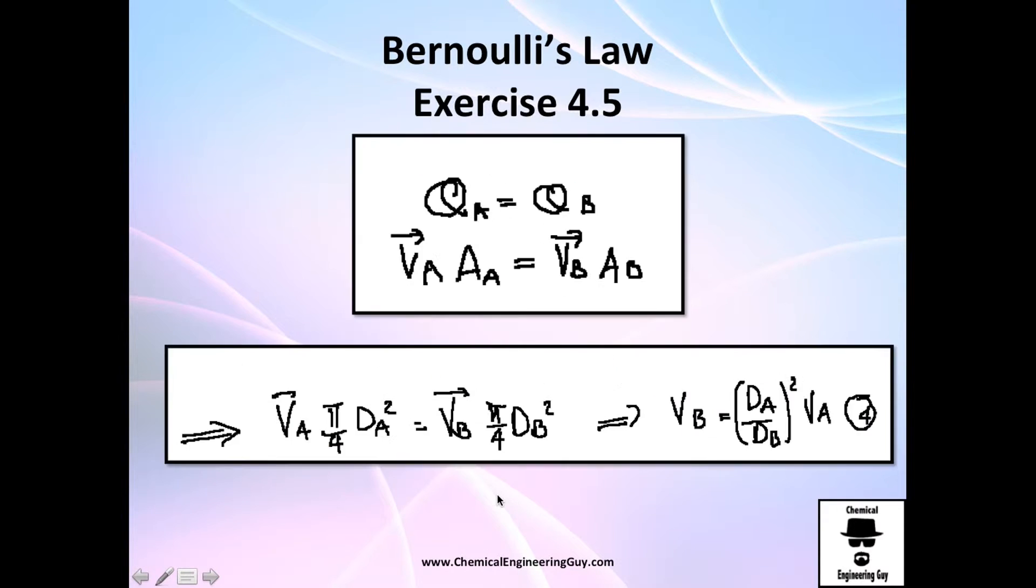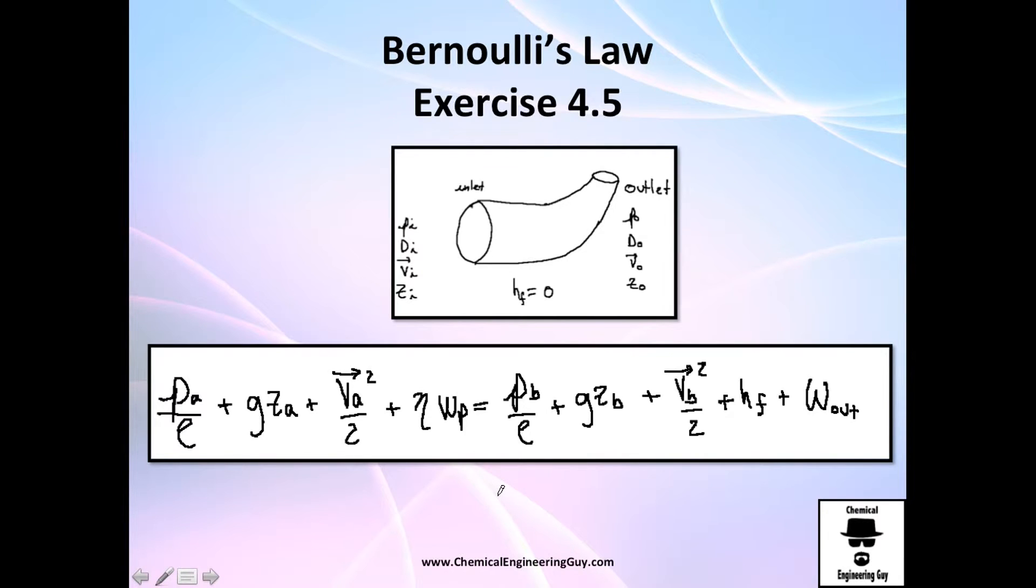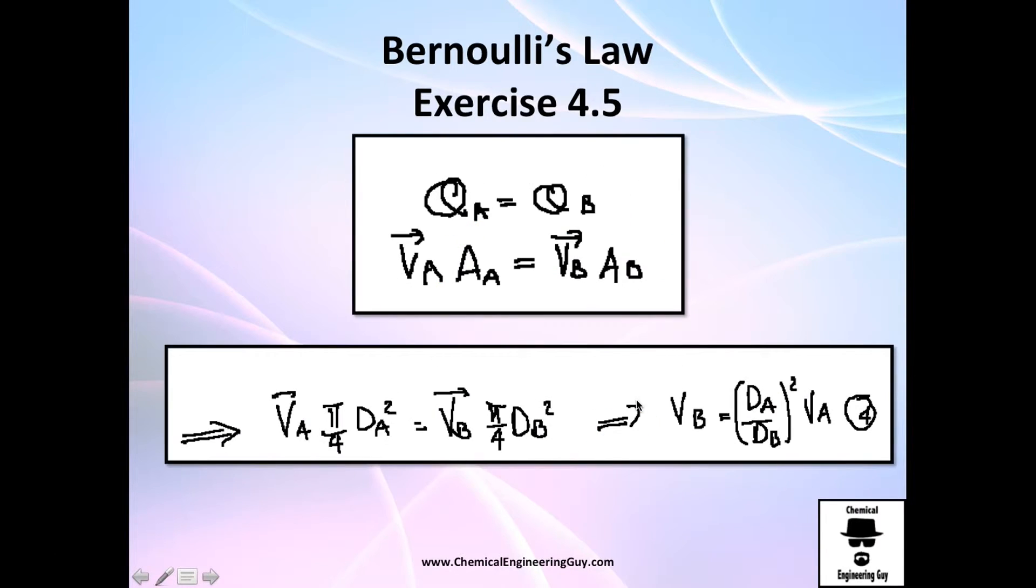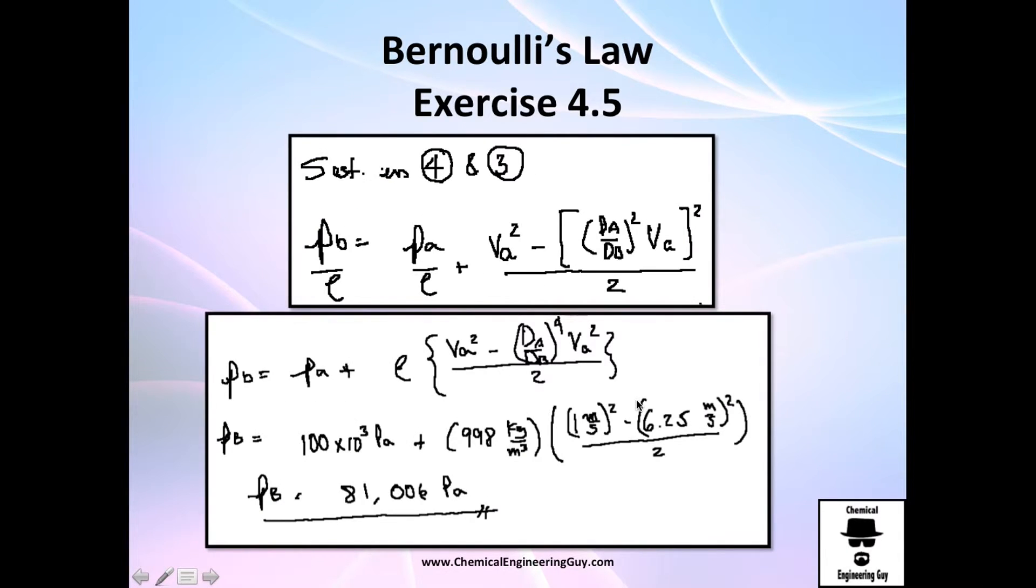Why is there a pressure drop if we have no friction loss? Well, first things first: the pressure drop is essentially this right here. Why do we have a pressure drop? Because we have a velocity increase at the outlet. If we had a velocity decrease, we would have an increase in pressure. But in this case we have an increase in velocity that will decrease pressure.